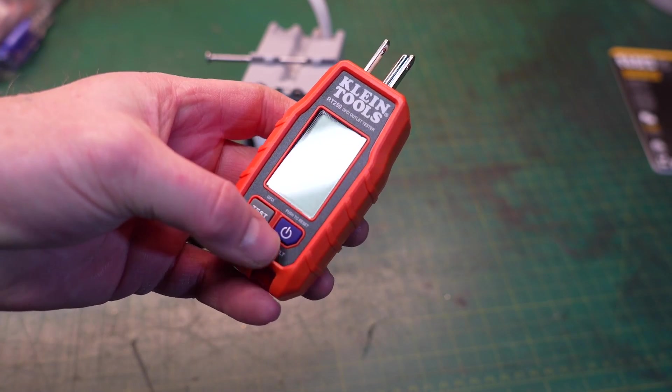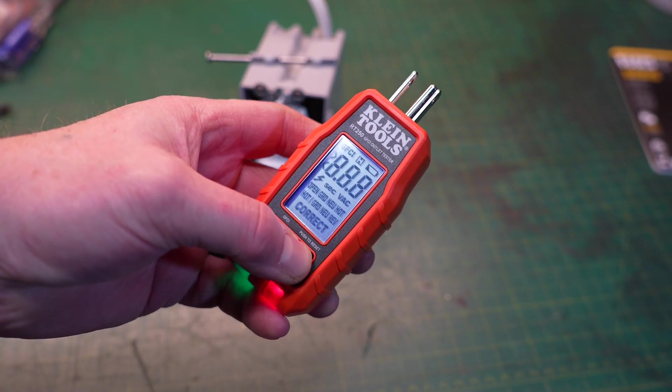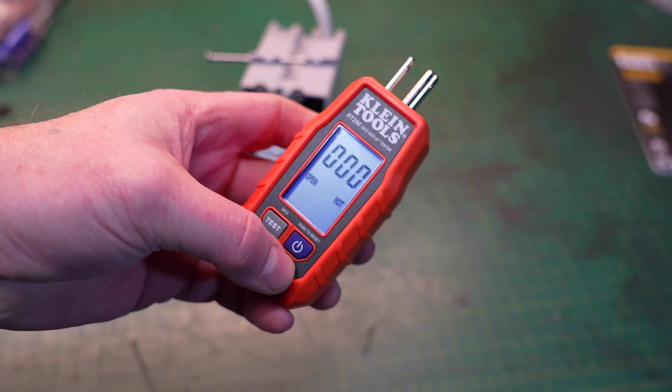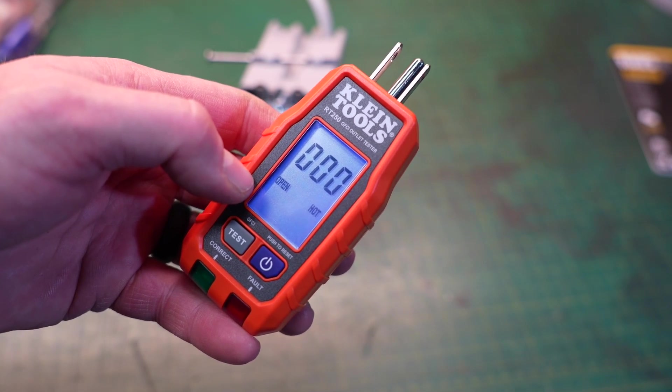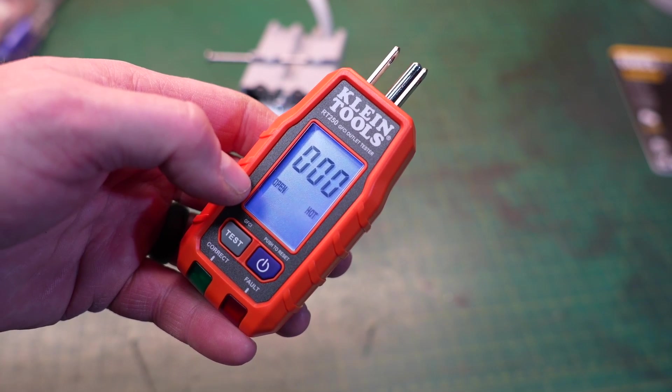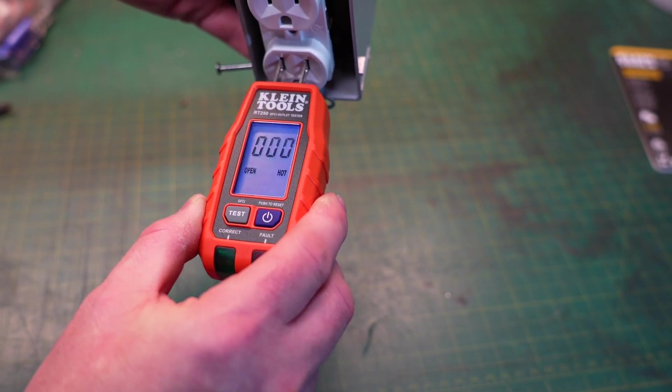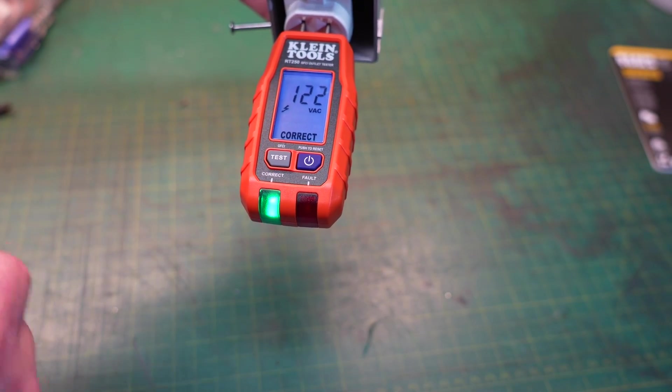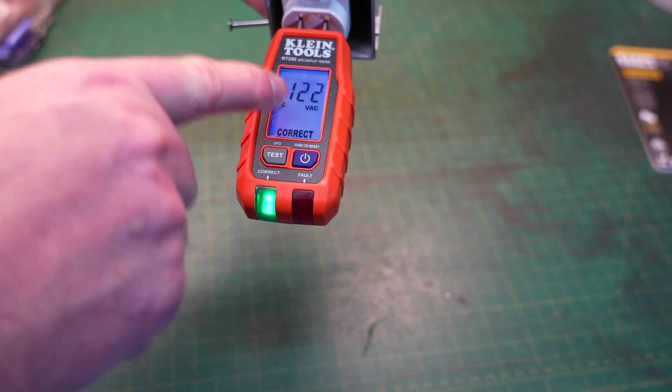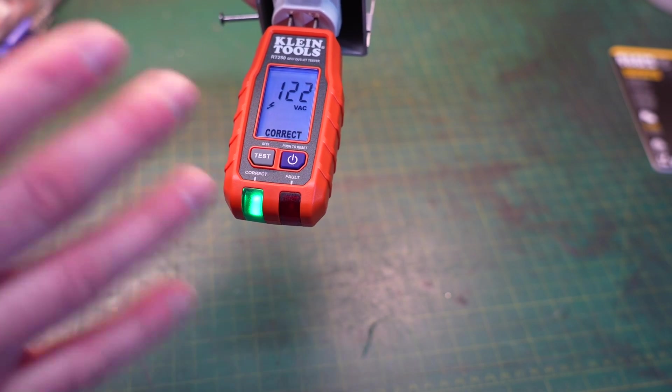Because it has batteries you have to turn the tool on by pressing the power button and holding it down. Right off the bat you can see that it is measuring an open hot wire because there is no hot wire connected to this. Now when I plug it into this live receptacle that I have on my workbench it's going to give you a green light. That means it is connected, everything is correct, and it's going to give you a voltage reading. In my house I currently have 122 volts so everything is working properly.